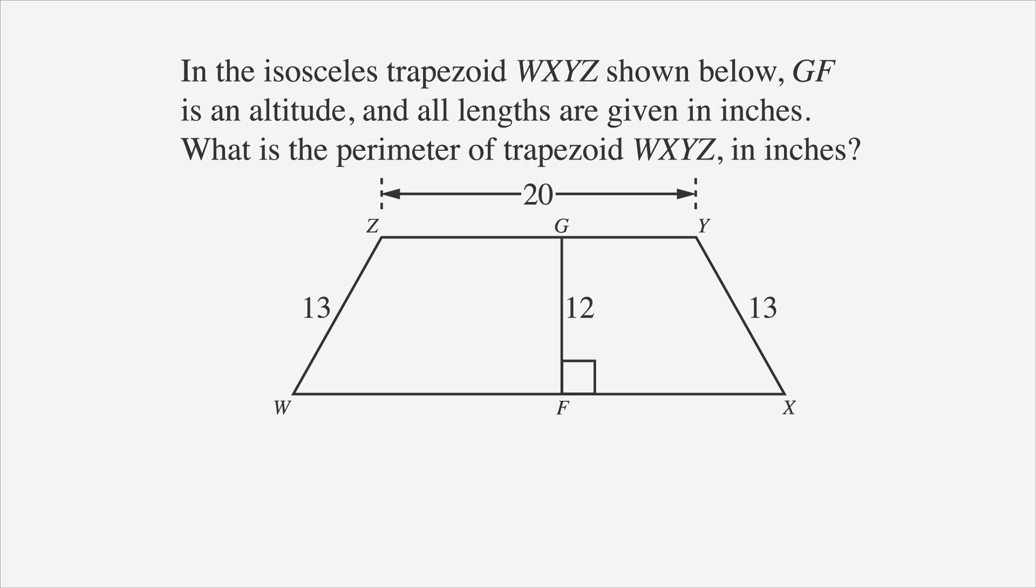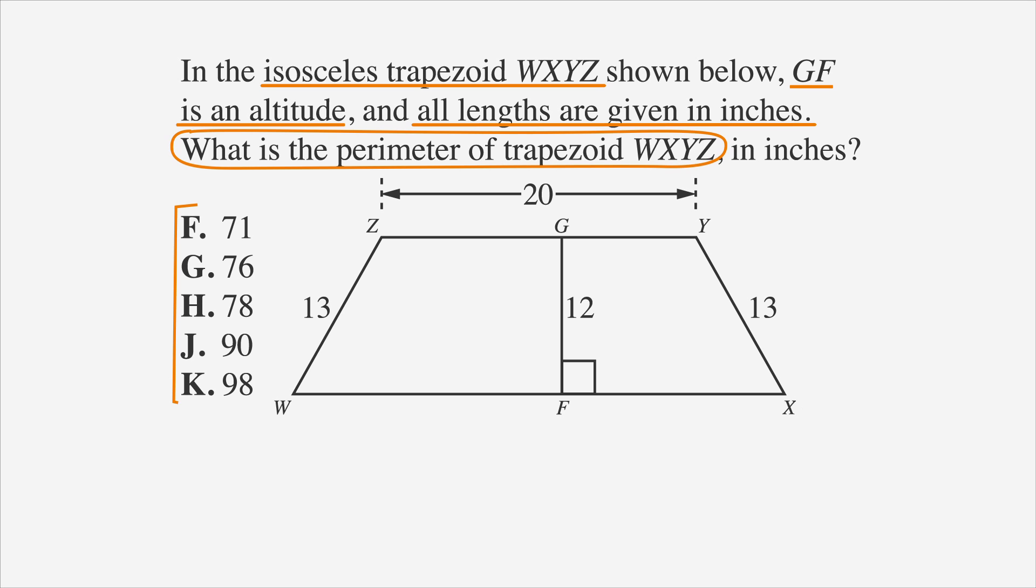In the isosceles trapezoid WXYZ shown below, GF is an altitude and all lengths are given in inches. What is the perimeter of trapezoid WXYZ in inches? As always, we'll begin by underlining the facts, circling the keywords, and then labeling the answer choices.